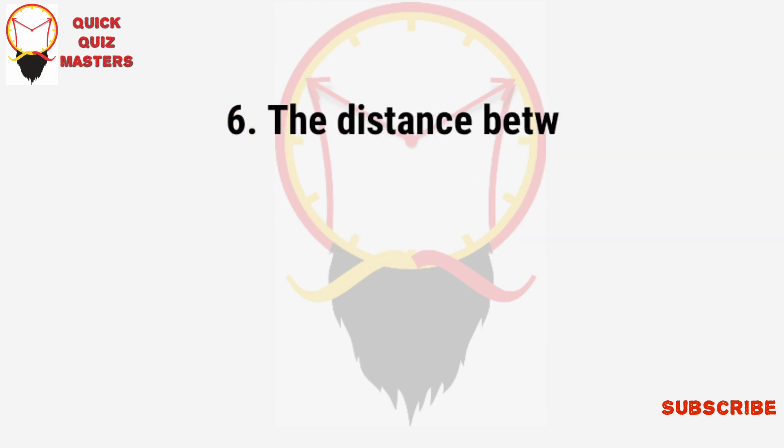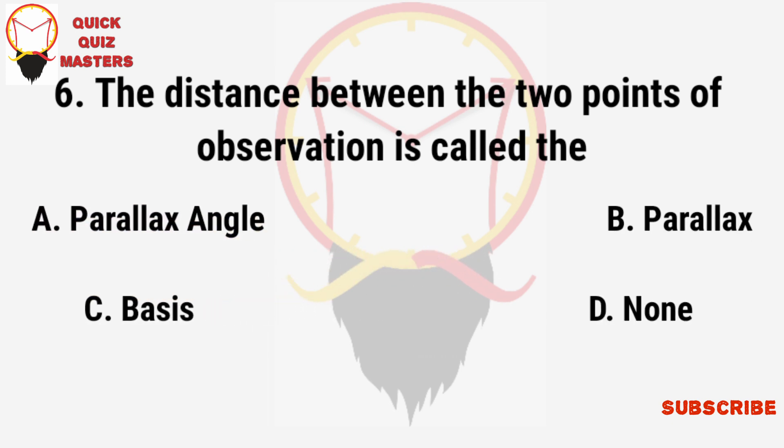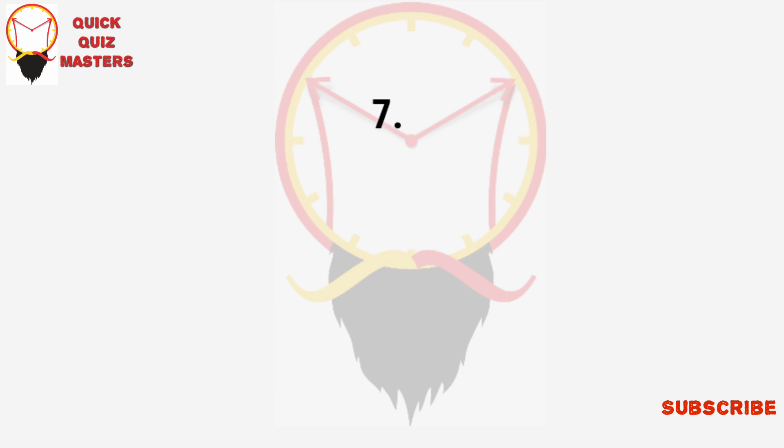The distance between the two points of observation is called the: parallax angle, parallax, basis, none of these.